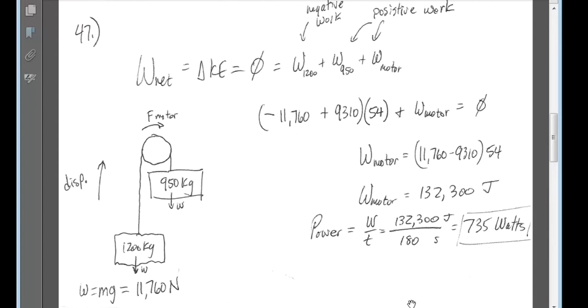The elevator's counterweight has a mass of 950 kilograms, and so the elevator motor must help. What average power is required of the force the motor exerts on the cab via the cable?